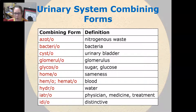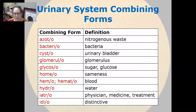Azoto means nitrogenous waste, which you'll see in azotemia. Bacterio means bacteria. Cysto means urinary bladder. Glomerulo means glomerulus. Glycoso means glucose or sugar.